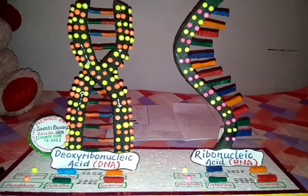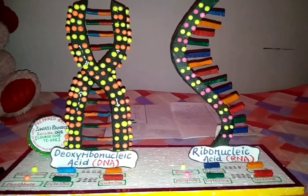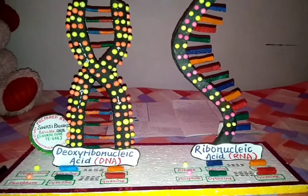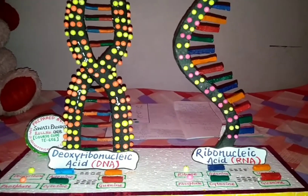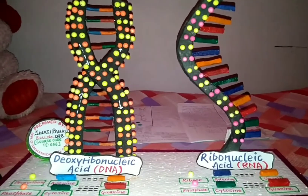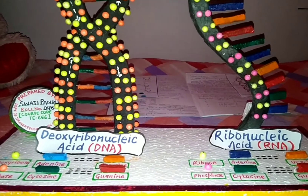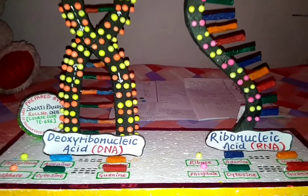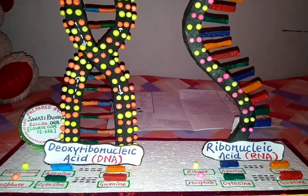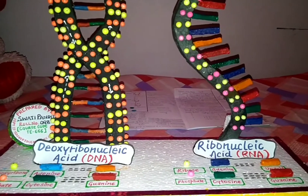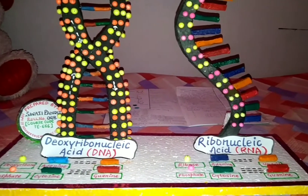This is Swati Pandit, roll number 98. The topic of my model is DNA and RNA. As we know, nucleic acid is of two types, namely DNA and RNA. DNA stands for deoxyribonucleic acid and RNA stands for ribonucleic acid.